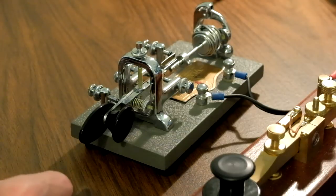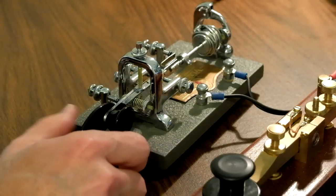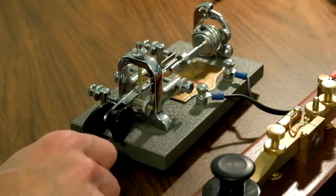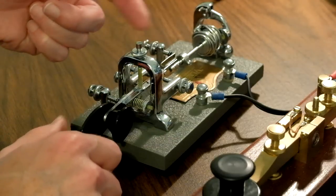So what makes a bug unique is it automatically makes dits, or semi-automatically makes dits. When you press on the dits side—of course this is the dits side—it will make dits based on this little spring moving back and forth.